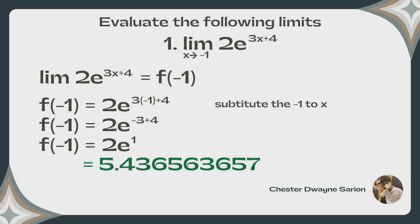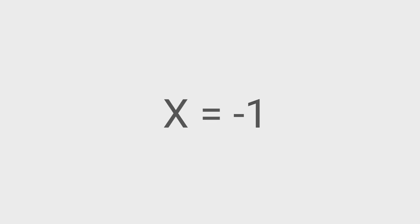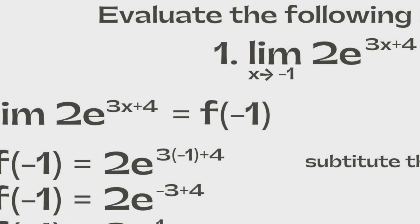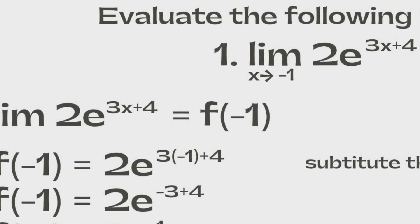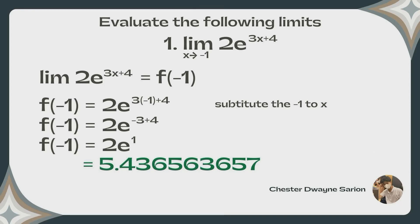Evaluate the following limits. Problem 1: the limit of 2e raised to the power of 3x plus 4 as x approaches negative 1. Since we have the value of x, which is negative 1, our value of f(x) is negative 1. We are just going to substitute negative 1 into x.